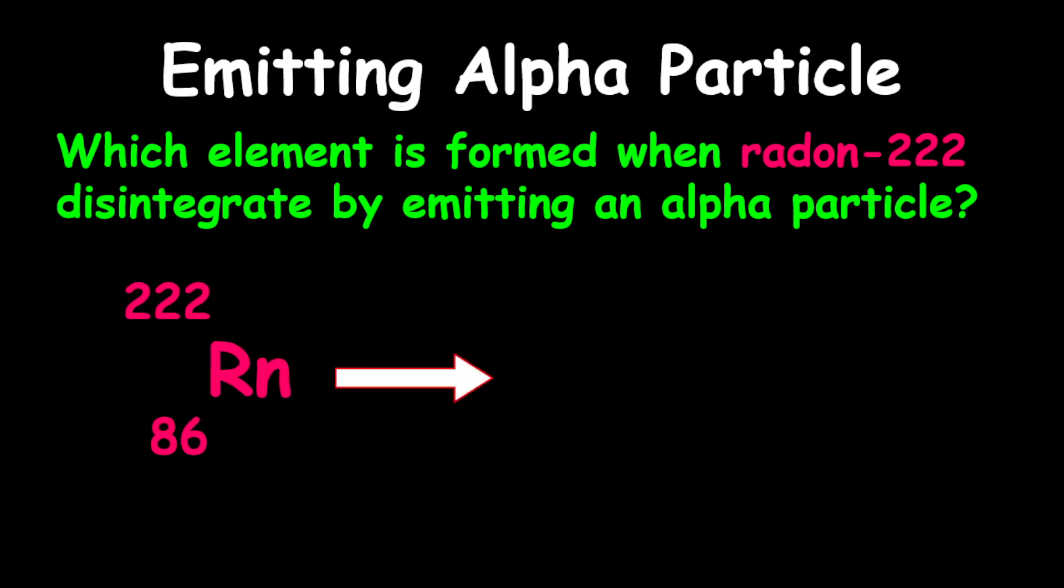Since we're giving off an alpha particle, we're going to give off a particle with a mass of four and a proton of two. To determine the newly formed element, we're going to subtract four from 222. This gives us a mass of 218.